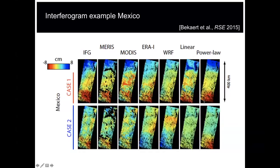The linear or power-law methods are phase-based — estimated from the data itself based on correlation with topography. The linear method estimates a single correlation over topography: in cases where that matches the atmosphere it does a very good job, but otherwise it tends to underestimate the correction. The power-law method allows for spatial variability, trying to account for regional changes in how the troposphere behaves. It works well in some cases but doesn't capture the highest resolution.